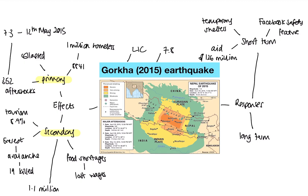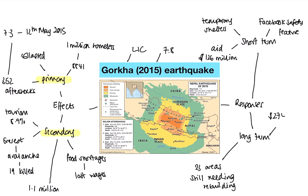For long-term responses, as of now there are still 23 areas needing rebuilding. One major criticism of the short-term aid is that despite $126 million being raised, these 23 areas still need repair — though you could argue the damage was so bad they simply need more cash. A follow-up payment of $274 million was committed eight months after the earthquake.